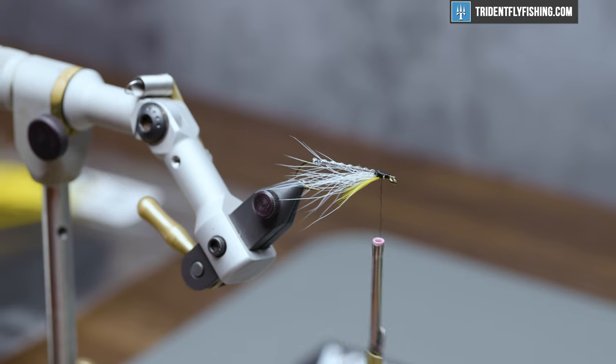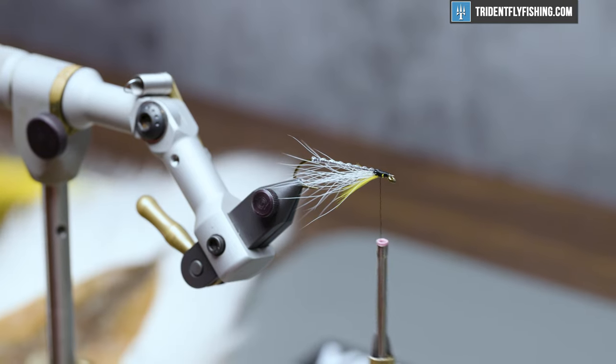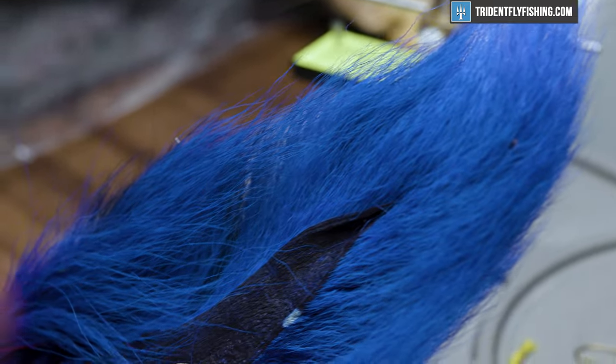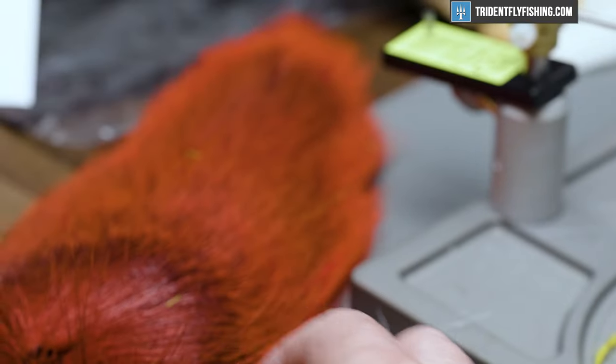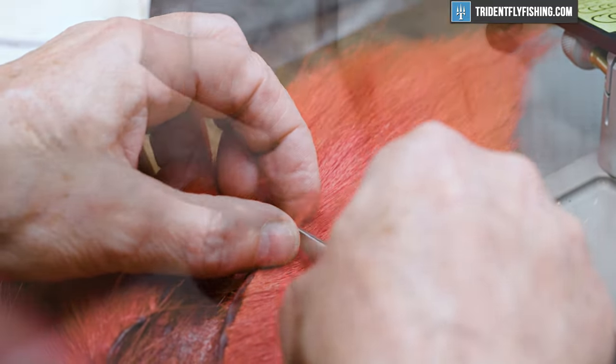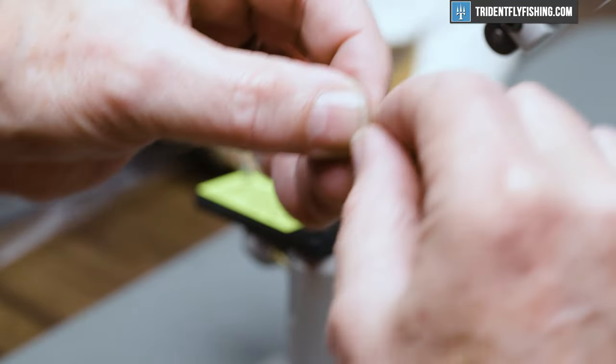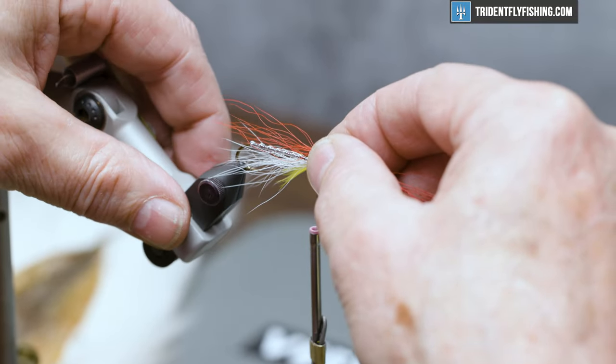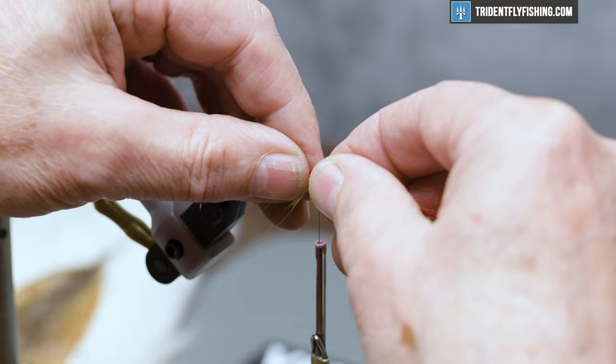Now we'll work on the back of the fly, we're going to add a little color to it. The first is going to be some red bucktail. Just a few strands here, just enough to add some color. Just trying to even the tips up a little bit here. So we're going to tie these in right on top to extend back just past the bend of the hook.